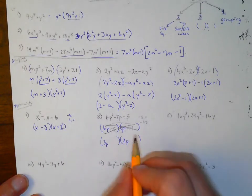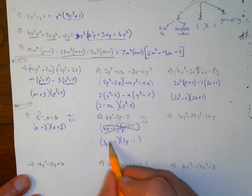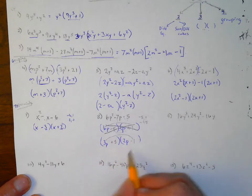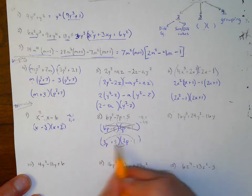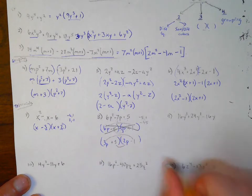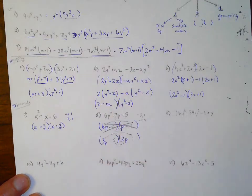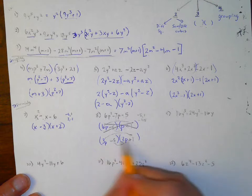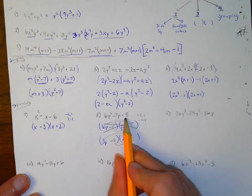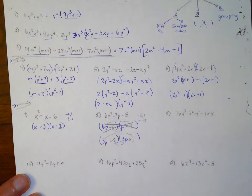That means I just switch the signs: put +1 and −5. Now I have 3−10, which is −7. So we've got it: (3p+1) is not quite right — the factor pair that works gives us −7 for the middle term and the product still gives −5 at the end.